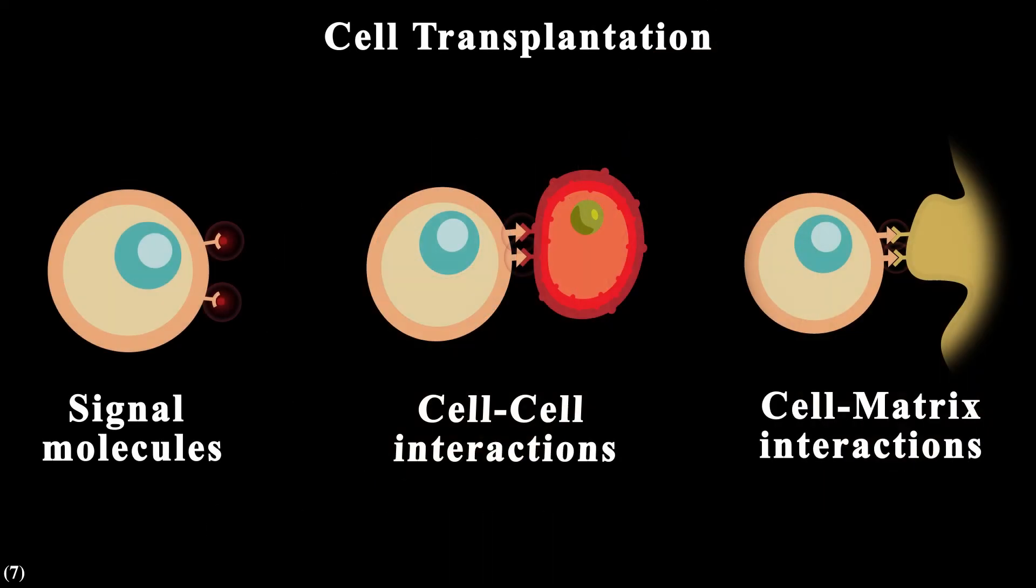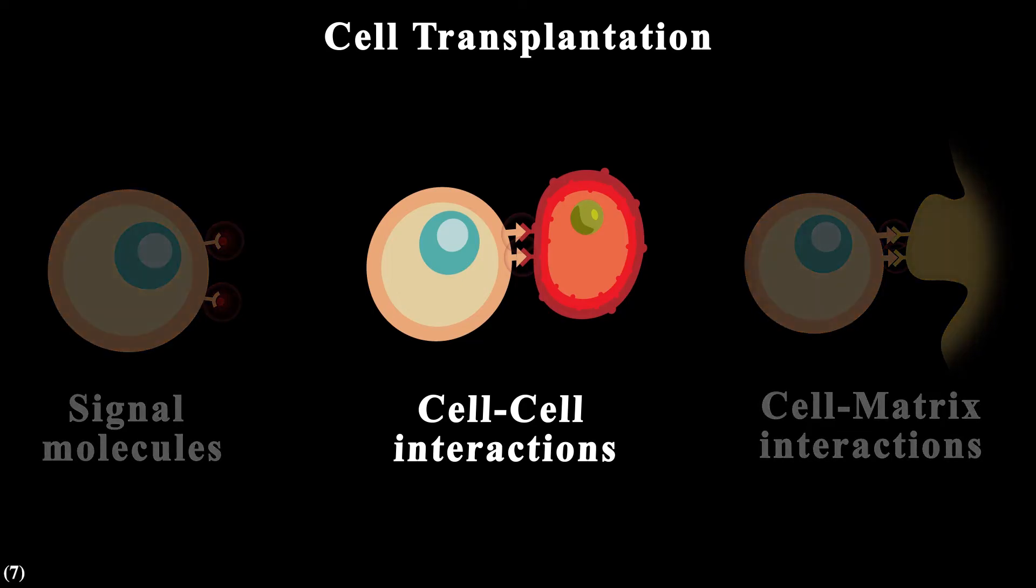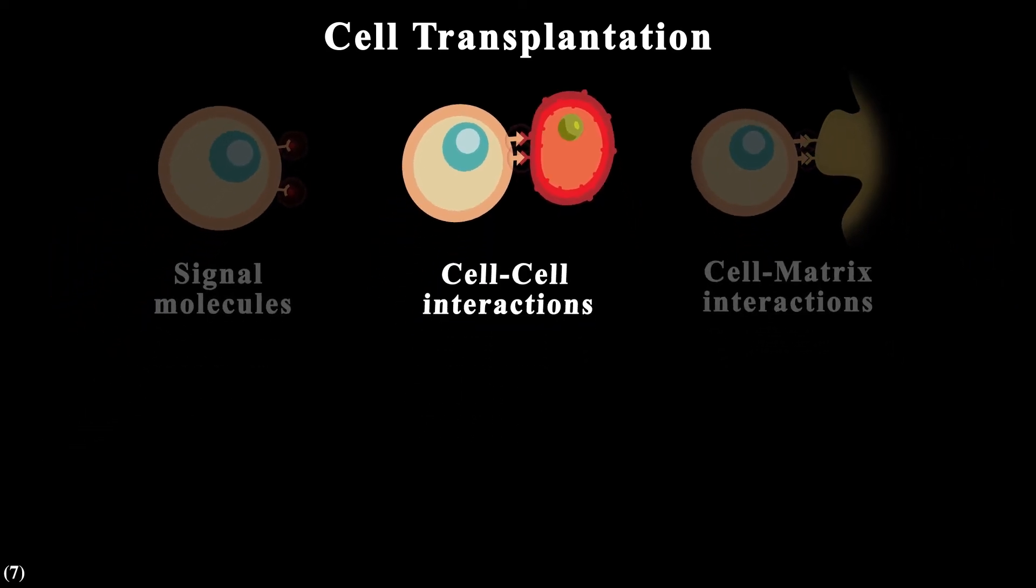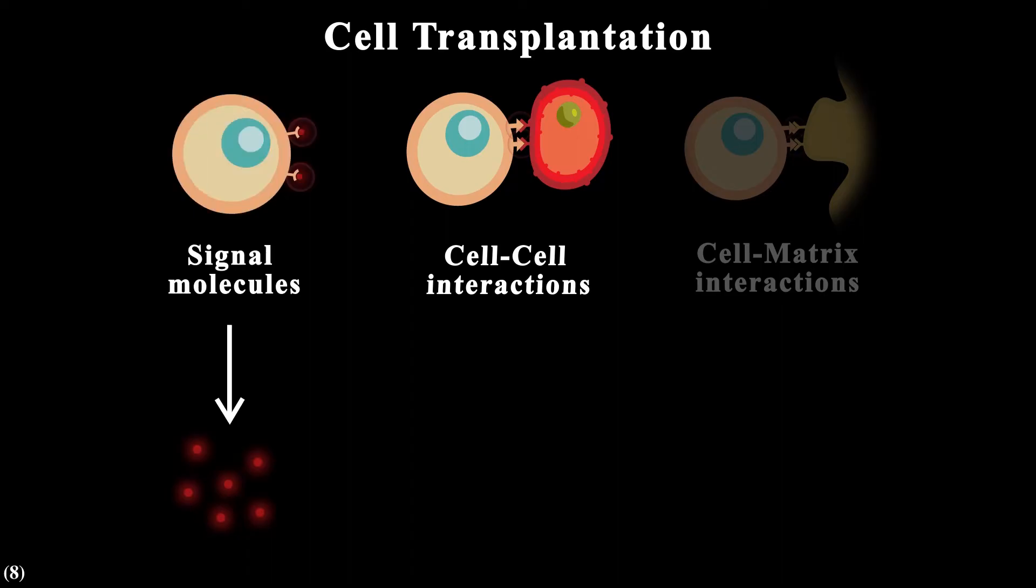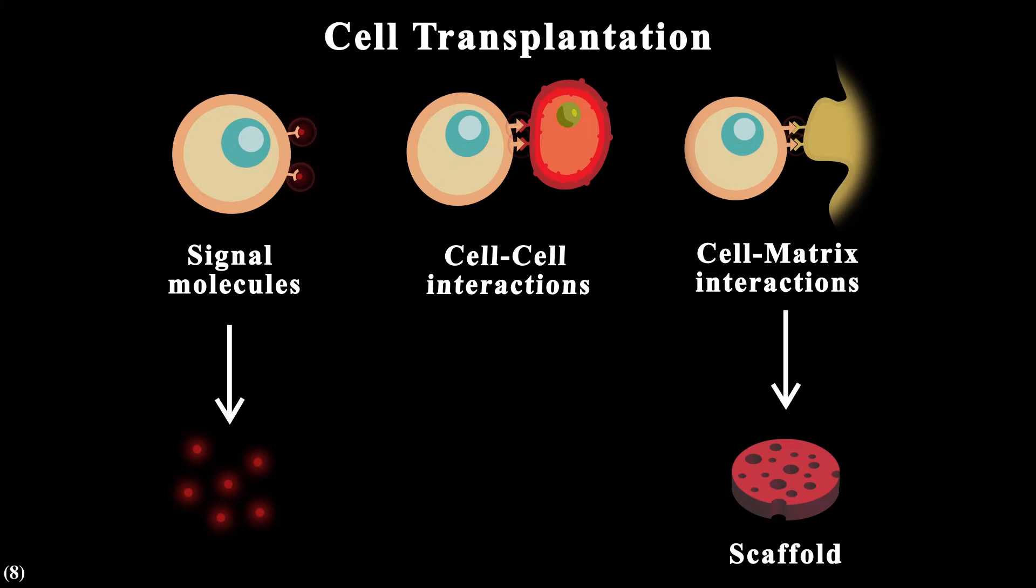In cell transplantation, we have cell-cell interactions, but we eliminate signaling molecules and cell-matrix interaction. For solving the signaling part, we can add signaling molecules ourselves, and for cell-matrix interaction, we can make a temporary substrate for our cells, which we call scaffold, to provide a suitable environment for them. And obviously, we use biomaterials to make our scaffold.